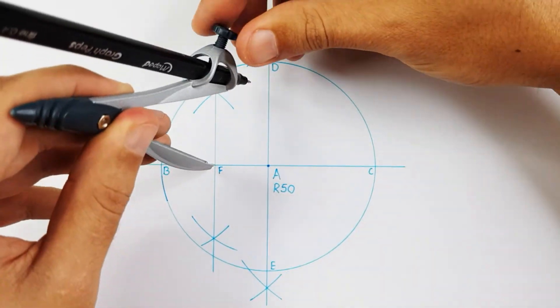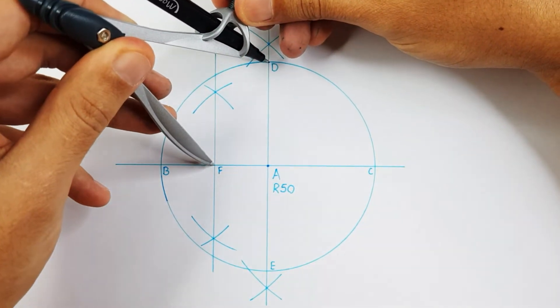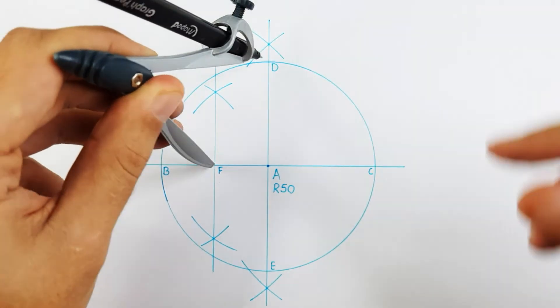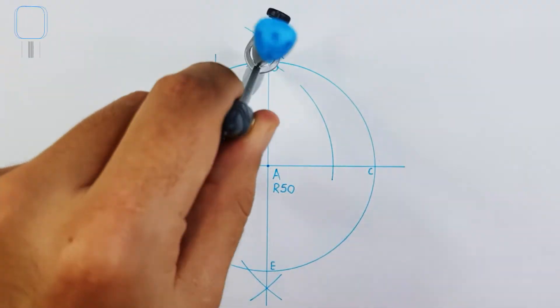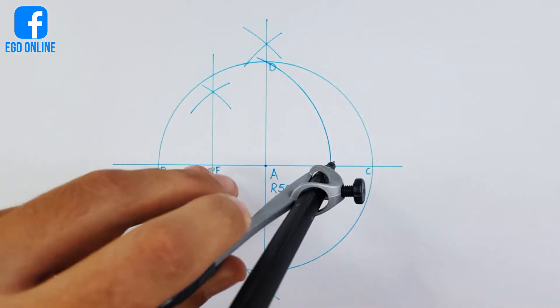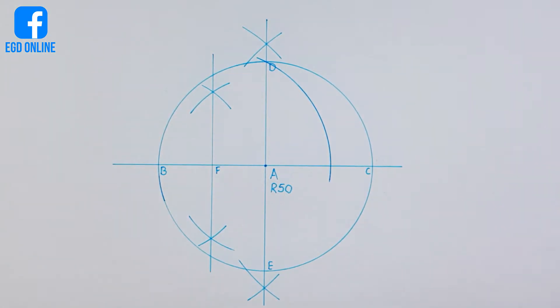Place your compass on point F and adjust it to point D. Project point D onto your horizontal line. Label this point as point G.